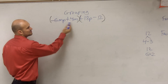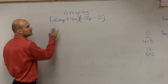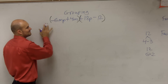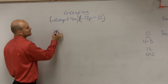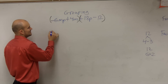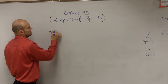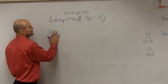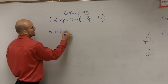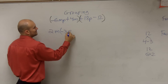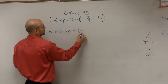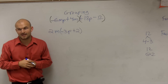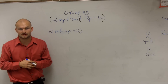What can I factor out of these two? I can factor out a two and an m. So when I factor out a 2m, I'm left with a negative 3p plus 2. Does everybody follow me with that? I'm doing a little more in my head now rather than showing every step.